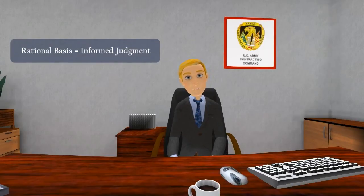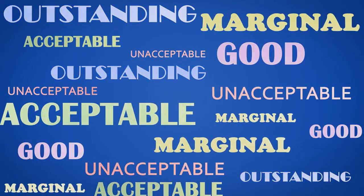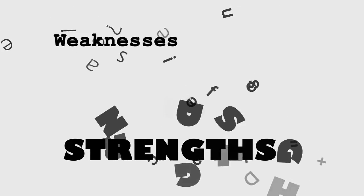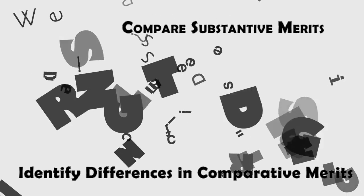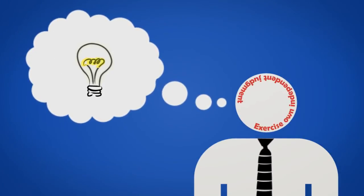That means that the decision must be based on what the lawyers call informed judgment. Informed judgment simply means that there must be specific, explicable, understandable reasons why the particular decision was made. If one proposal has higher adjectival ratings than all of the other proposals in the factors other than price or cost, isn't that a rational basis for selecting that proposal? Not really. You cannot rely on adjectival ratings alone. These ratings are merely labels and cannot be the sole basis for your trade-off decision. You must look behind the adjectival ratings to identify, understand, and consider the substantive merits underlying and supporting these ratings — that is, the evaluation team findings, such as specific strengths, weaknesses, and deficiencies. You must also compare the substantive merits of competing proposals, identify differences in those comparative merits, and determine the significance of those differences. And all of this, as well as the decision itself, must incorporate the exercise of your own independent judgment.